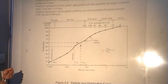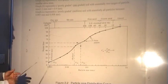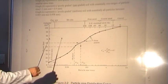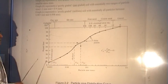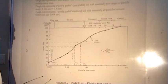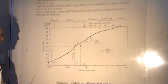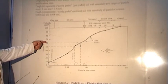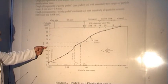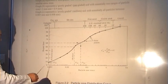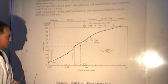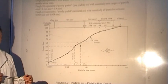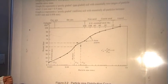Here we can see a typical particle size distribution curve with data points shown and a smooth curve drawn between them. On the top we have the US or British standard sieve numbers and the equivalent size in millimetres. From this curve we can determine the D60 and D10 values — the diameter at which 60% and 10% of the sample passes — and compute the coefficient of uniformity to assist in soil classification.